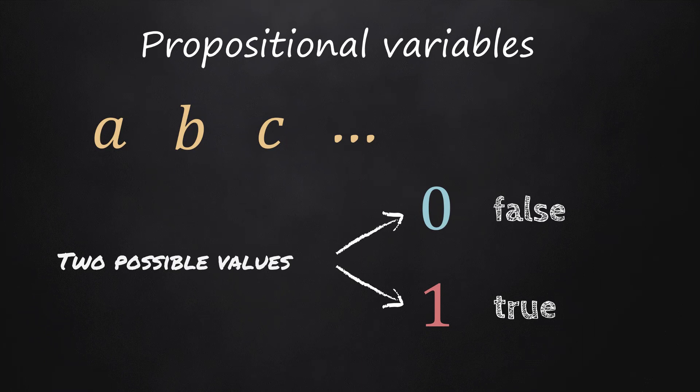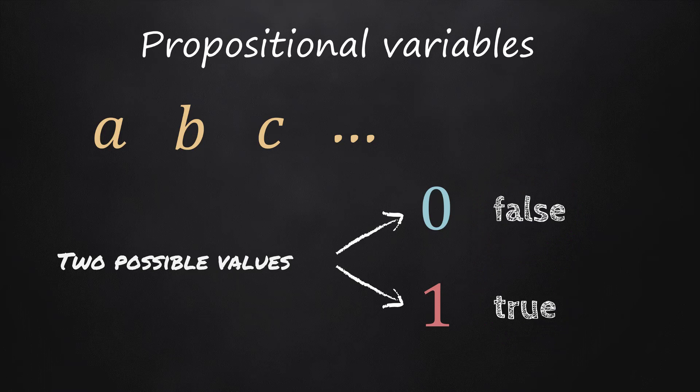Propositional variables can take two possible values, false and true, which are called truth values. In this presentation, propositional variables will be represented by lowercase letters.